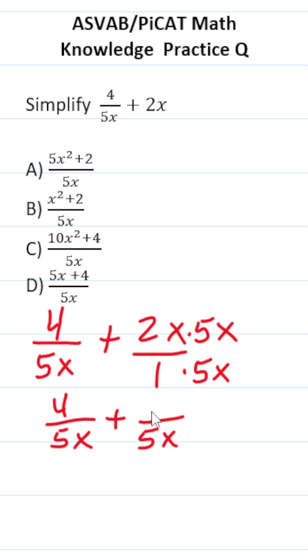What's 2x times 5x? 2 times 5 is 10, x times x is x squared.